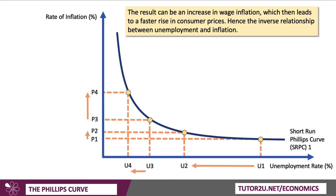The result is an increase in wage inflation and other costs, which then feeds through to a rise in consumer price inflation up to P4. There's an inverse relationship between unemployment and inflation, and the trade-off between the two objectives is worsening. We've managed to achieve a small fall in unemployment at the expense of a significant rise in inflation. That's your basic short-run Phillips Curve idea.